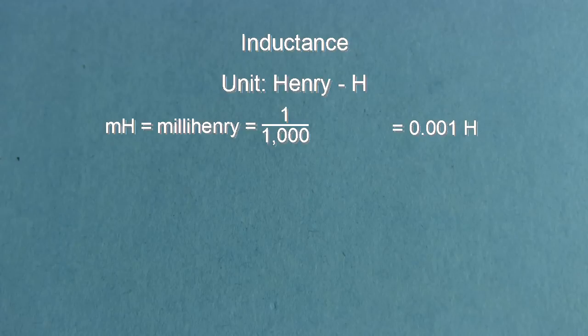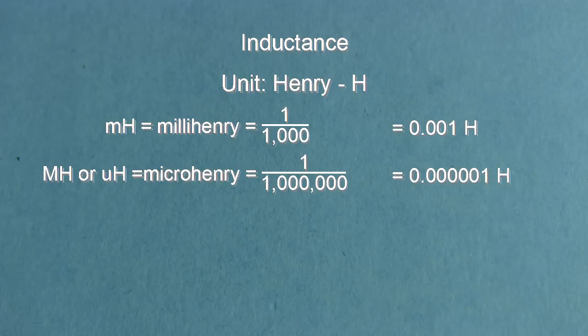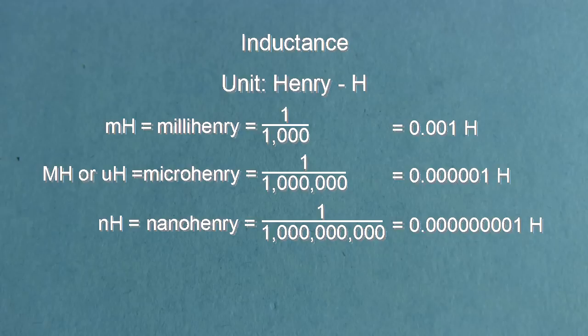Lowercase mH is millihenry, or a thousandth of a henry. Capital mH, or μH, is microhenry, or millionths of a henry. And nH is nanohenry, or billionths of a henry. So you can see a nanohenry is quite small.